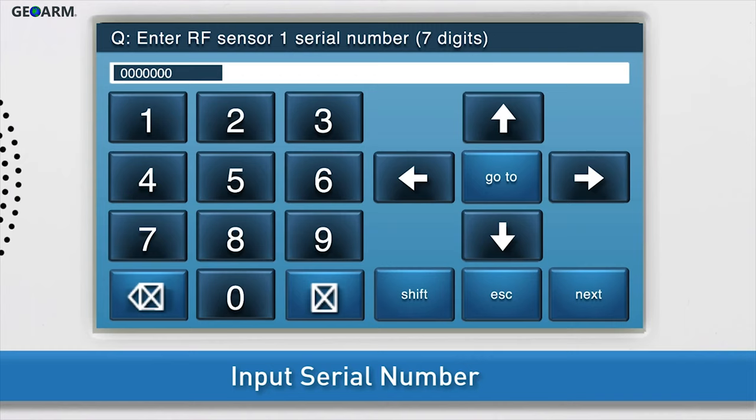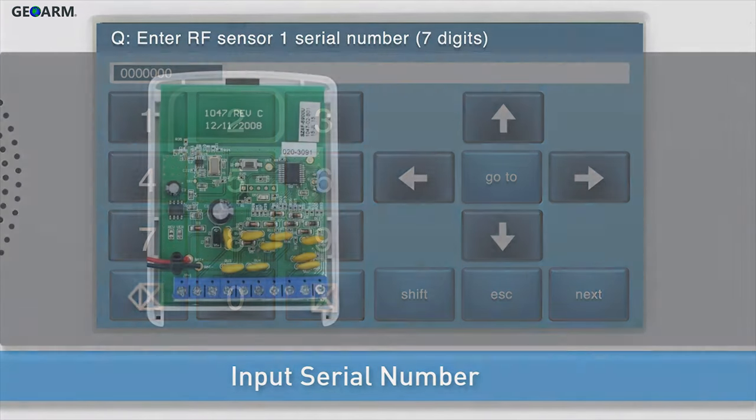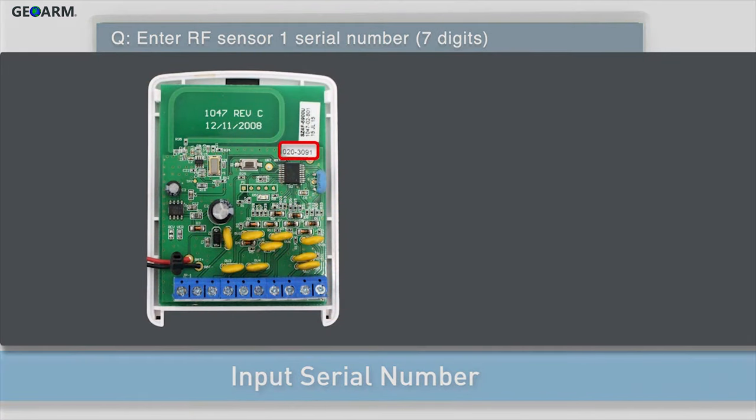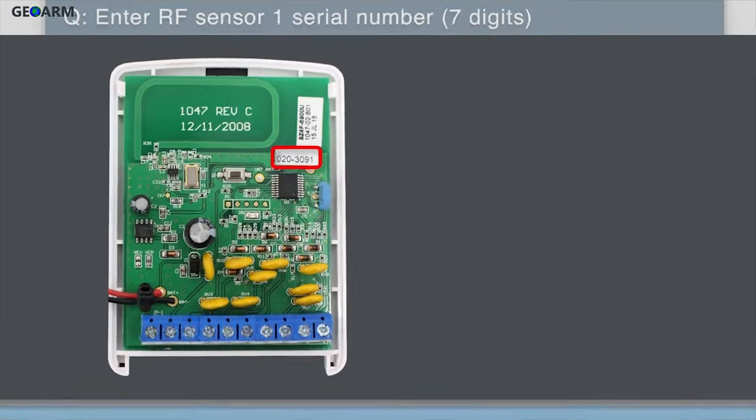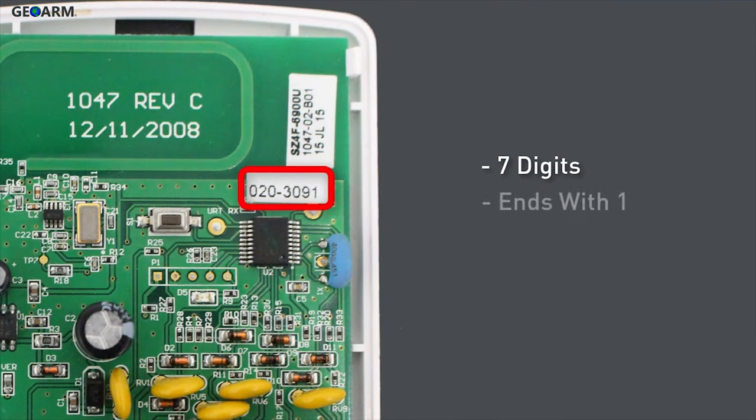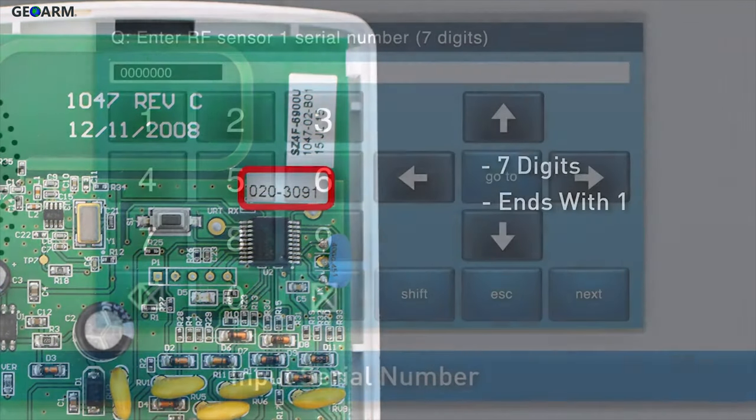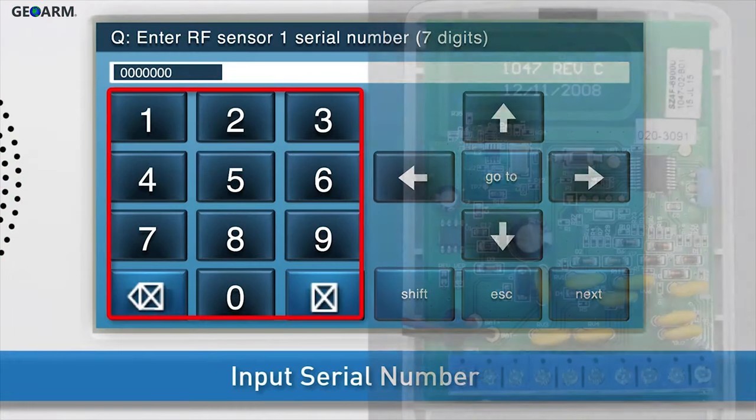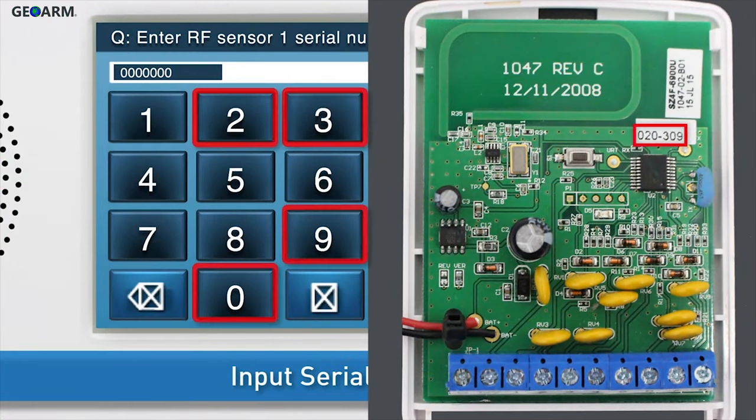Next, input the serial number for the takeover module. You will find the serial number inside the takeover module. The serial number will contain seven digits and end with one. Use the on-screen keypad to type the first six digits of the serial number.